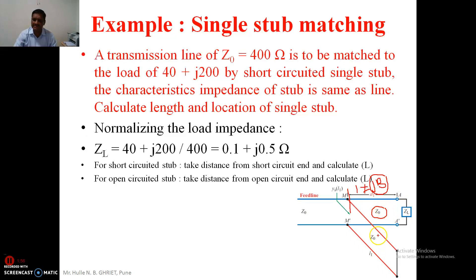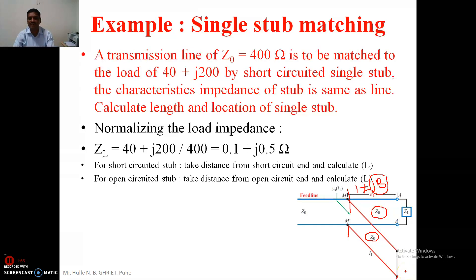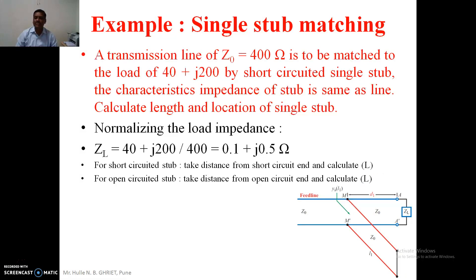The impedance is shown here, but in the actual example we deal with admittances. To cancel out the admittance, the appropriate stub admittance value is connected, and from that we calculate the length of the stub. These two things — the location of the stub D (distance from the load) and L (the length of the stub) — are the important parameters in single stub matching.